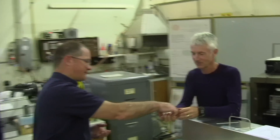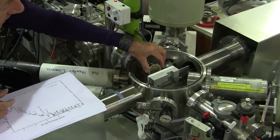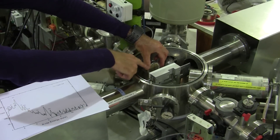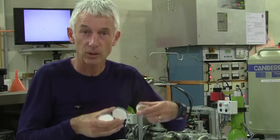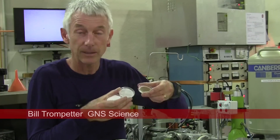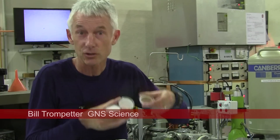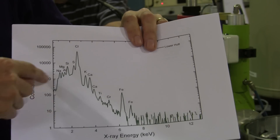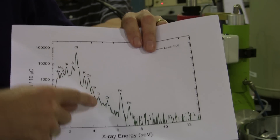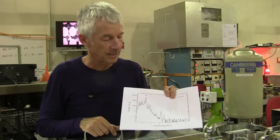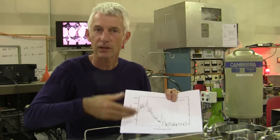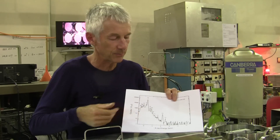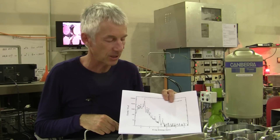From here we take these filters and we can put them in our chamber and we can illuminate them with a beam of protons which can tell us the elemental composition of the air pollution on the filters and the concentration of those particulates. As you can see there are a lot of different elements that occur in our air pollution, and these concentrations vary throughout a day or depending on where we're sampling or what sources are being active at a particular point in time.